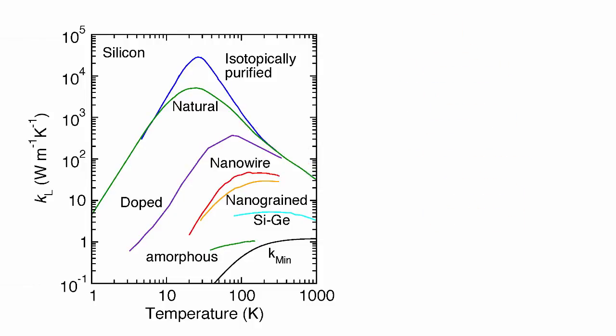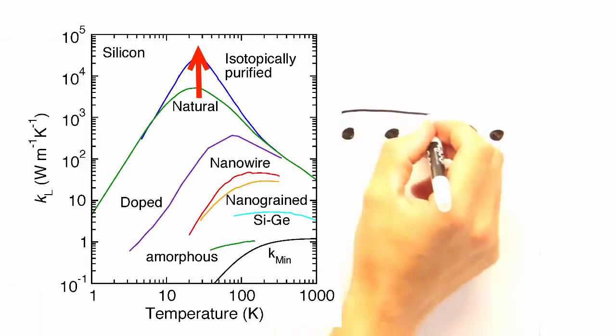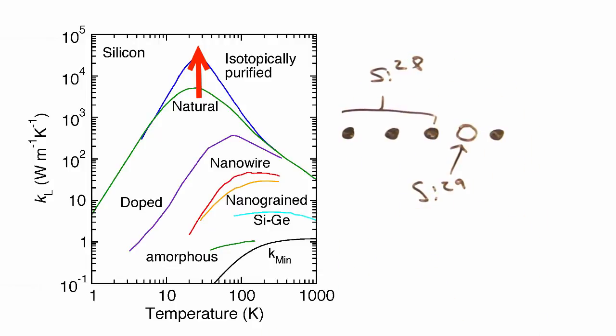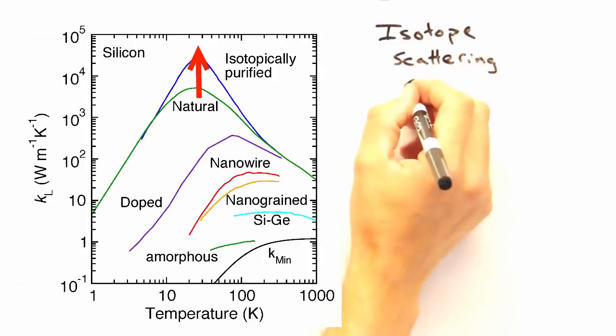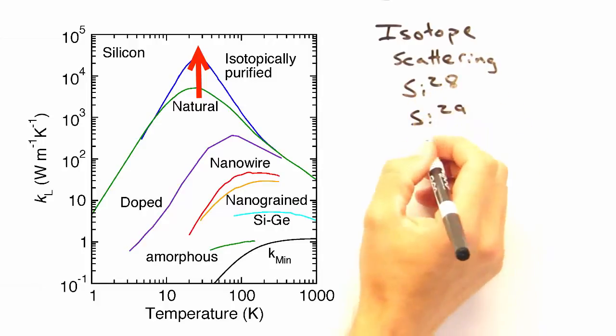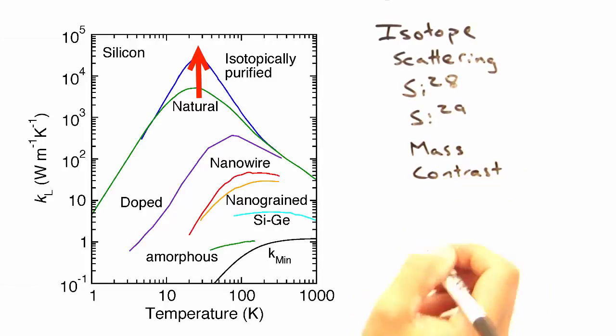All right. Next question. Let's say we start with natural silicon and remove a bunch of the isotopes that are present at more trace quantities. Why do we see this rise in our thermal conductivity? So if we remove the isotopes, we have less impurities, and therefore less defects. So we have an increased mean free path, which then increases kappa.